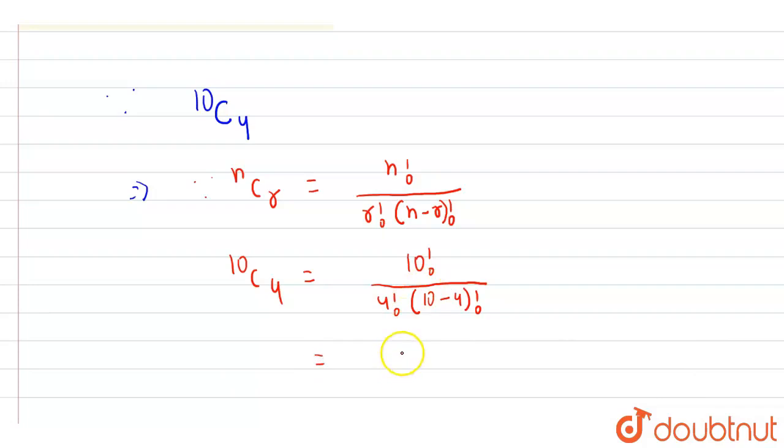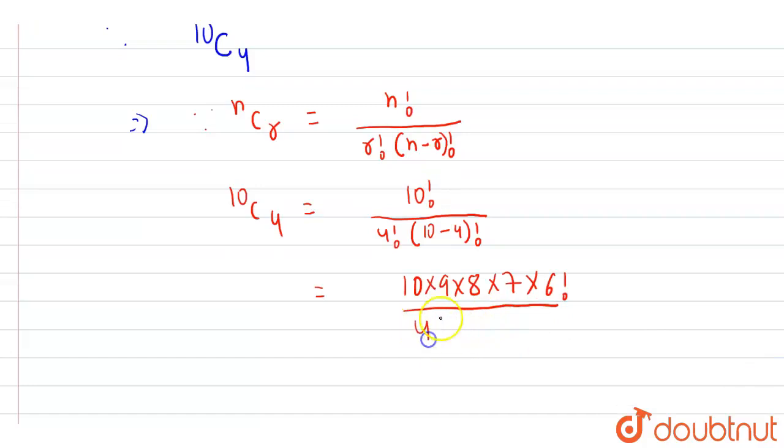Now let us simplify it. 10 factorial remains as it is. We know 10 factorial can be written in the form of 10 into 9 into 8 into 7 into 6 factorial upon, in the denominator, we have 4 factorial into 10 minus 4 is 6 factorial.